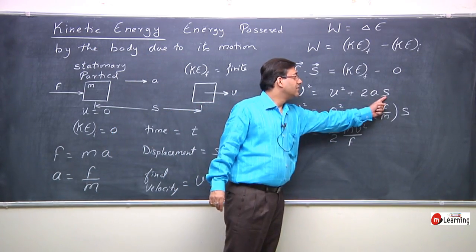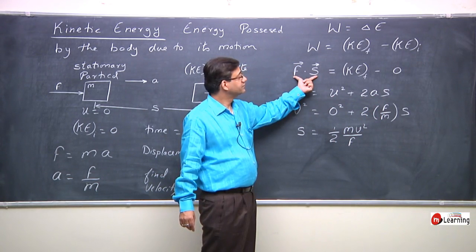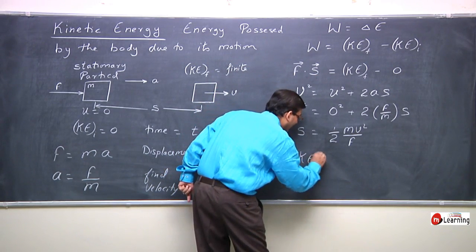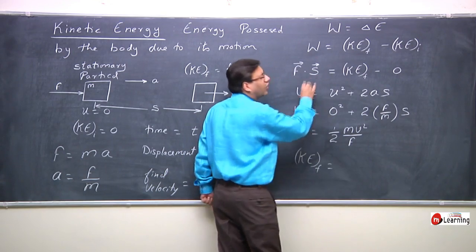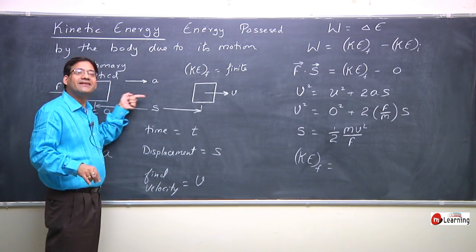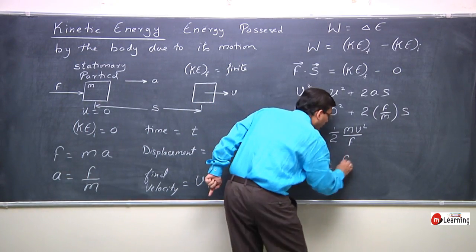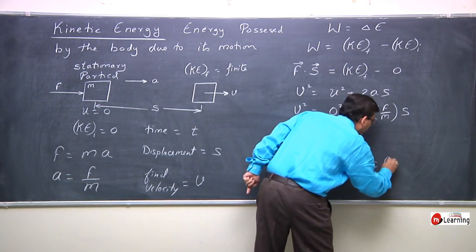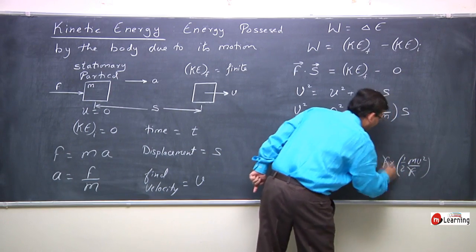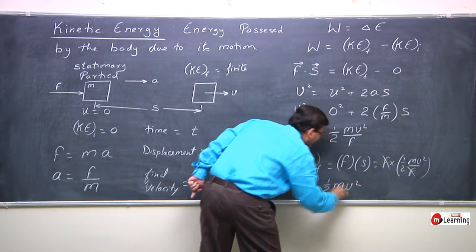Now substitute this displacement into the equation. Final kinetic energy equals F dot S. Since force and displacement vectors are collinear — they are in the same direction, the angle between them is zero, and cos theta equals one — it becomes force into displacement, which is F into ½mv²/F. The F cancels, so the kinetic energy possessed by the body is ½mv².